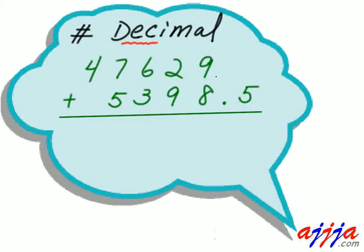Now let's add. This one is 47,000, then 629 — and there's a decimal point right there, hiding. So then zero after the point. Now this other number: there's a comma sign which means thousands, and the decimal point is right there. After the point we can add more zeros.